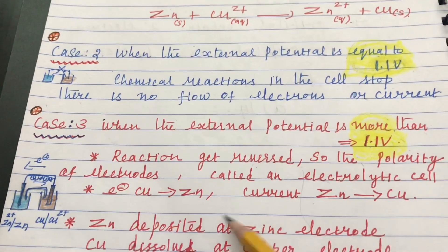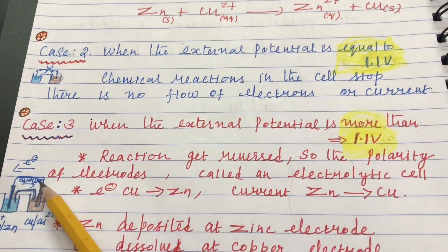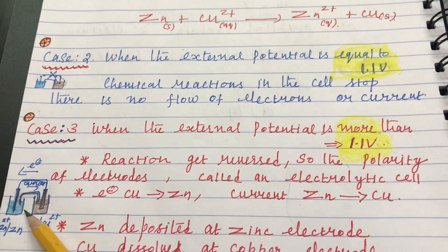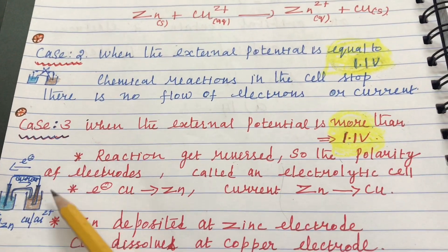what happens? Here, the reaction gets reversed. The polarity of electrodes acts as an electrolytic cell.